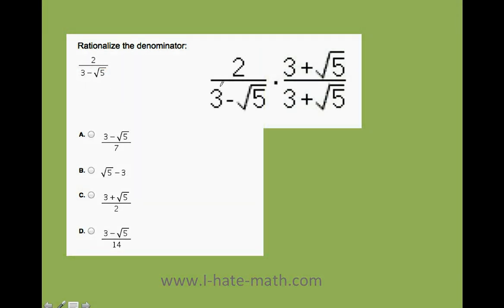So look what we're going to do. We're going to have the expression times 3 plus the square root of 5 over 3 plus the square root of 5. You need to do it to the top and the bottom because if not you're breaking the balance. See, here I'm not doing anything illegal because 3 plus the square root of 5 over 3 plus the square root of 5 is just 1. So let's do it.